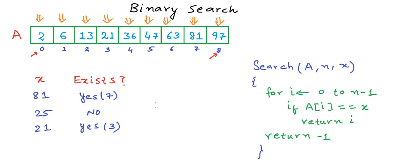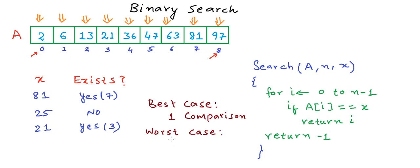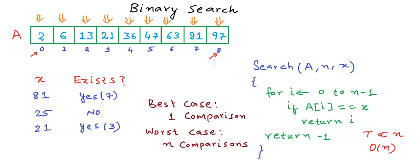Now with this algorithm, if we are lucky we will find x at the first position itself. So in the best case, we will make only one comparison. In the worst case, when x is not even present in the array, we will scan the whole array and make n comparisons with all elements, and then conclude that x does not exist. So the time taken in the worst case is proportional to the size of the array, or in other words, this is O(n) in terms of time complexity. The time taken grows as a linear function of n, so we also call this linear search.